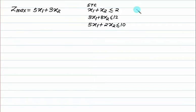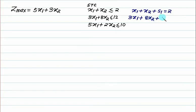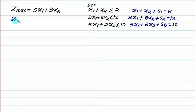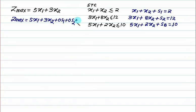All constraints are less than, so we will convert this by introducing the slack variable. We have x1 plus x2 plus slack variable s1 equals to 2, thrice x1 plus 8x2 plus s2 equals to 12, and 5x1 plus twice x2 plus s3. The contribution of the slack variable in the profit is 0, so the objective function is Zmax equals to 5x1 plus 3x2 plus 0s1 plus 0s2 plus 0s3.